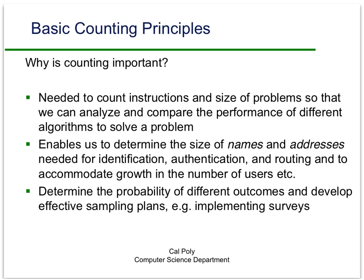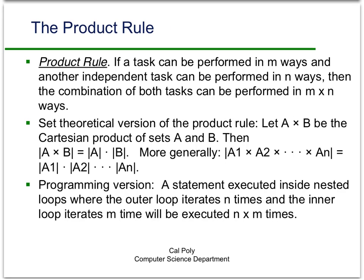You'll cover probability and statistics more in your statistics course. So the first basic counting principle is the product rule, and we've been using this informally in class all along. Basically, the product rule says that if a task can be performed in m ways and another independent task can be performed in n ways, then the combination of doing both tasks — task 1 and task 2 — can be performed in m times n ways.